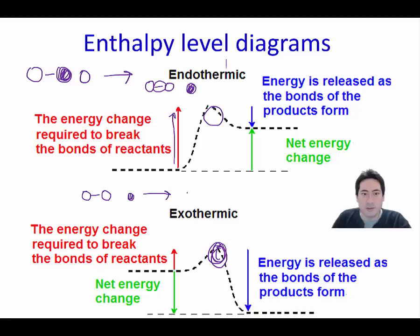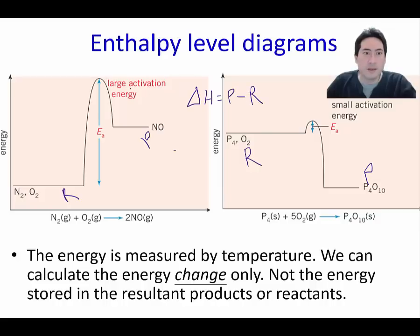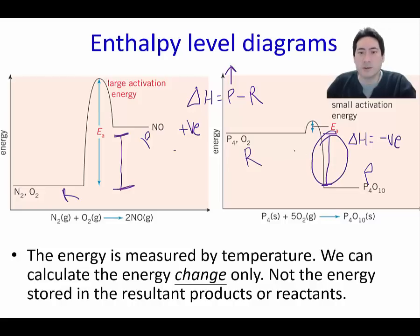The more stable product has a lower energy bond. You can see that delta H equals products minus reactants. For the endothermic case there's an increase in energy, so delta H is positive. For exothermic, there's an energy loss in the bonds formed, so delta H is negative.